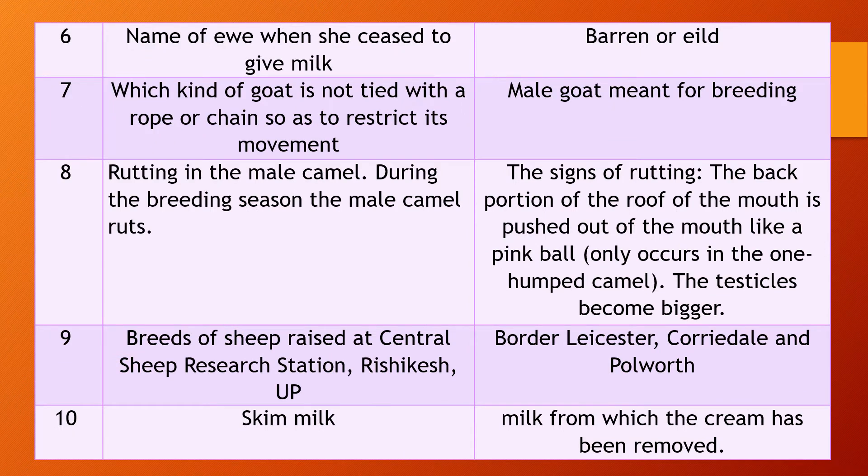Question 6. Name of a ewe when the ewe has ceased to give milk. Answer: when the ewe has ceased to give milk, it is called Barren or Elly.